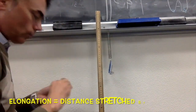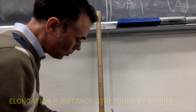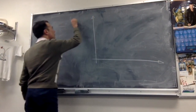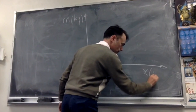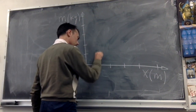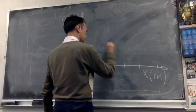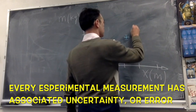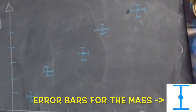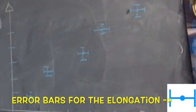Let me apply different weights to this spring and then measure the elongation, or the distance stretched by the spring. Now that I have values of mass and distance, I want to study the correlation between them. I'm going to plot the mass as a function of the distance, so mass will be on the vertical axis and the distance will be on the horizontal axis. Of course, I made experimental measurements and I have associated experimental errors. These errors are reflected within these error bars. This means that the mass I measure is within this error bar, and the distance measured is within this other error bar.